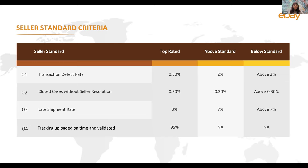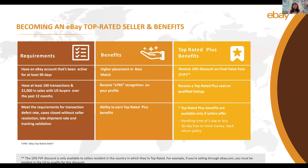Becoming an eBay top-rated seller indicates that you consistently deliver outstanding customer service. To become a top-rated seller, you need to have an eBay account that's been active for at least the last 90 days, have at least 100 transactions and $1,000 in sales with U.S. buyers over the past 12 months, comply with eBay's selling restrictions policy, and meet the requirements for transaction defect rate, cases closed without seller resolution, late shipment rate, and tracking validation as discussed earlier.